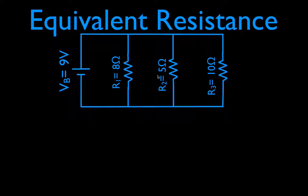R1 is 8 ohms, R2 is 5 ohms, and R3 is 10 ohms. And we have a battery, a voltage supply, which is a 9 volt battery.